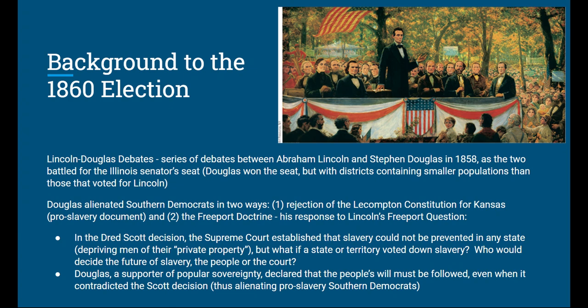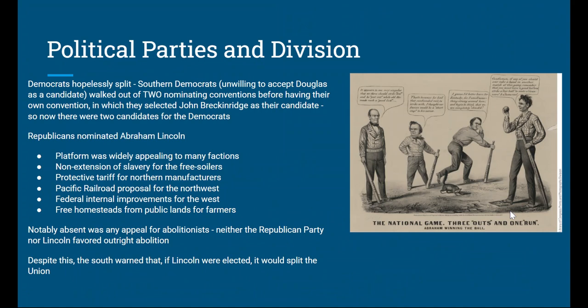This is really where the divide comes from. The Democrats were hopelessly split into Northern and Southern Democrats. The Southern Democrats were very unwilling to accept Douglas as their candidate. They tried to hold a Democratic nominating convention in Charleston, but when the Northerners made it clear that Douglas was their choice, the Southern Democrats literally walked out of the convention.